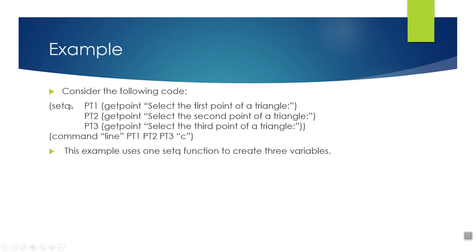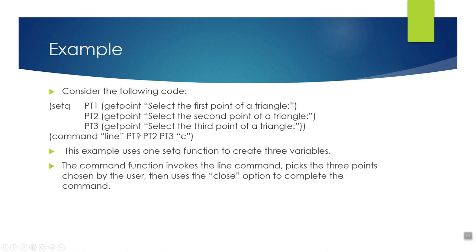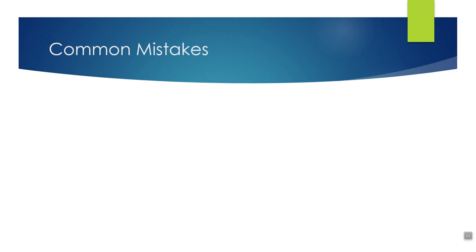When we get into the Visual LISP Editor, you'll see how it stacks these up and formats them automatically. Then we have the command function followed by line — it's going to draw a line from pt1 to pt2 to pt3, and then close that function and make a triangle. Remember, anything that you type at the command line has to be in quotation marks, so the word 'line' and the 'close' option both have to be in quotation marks.